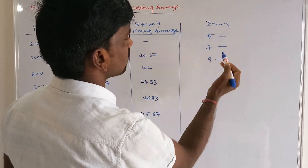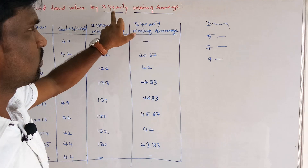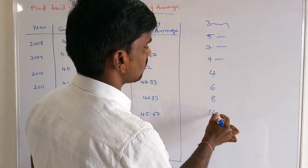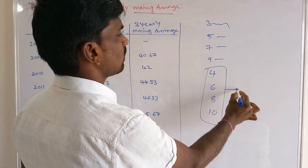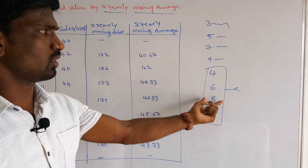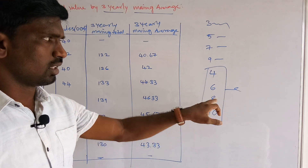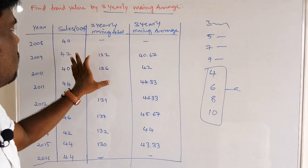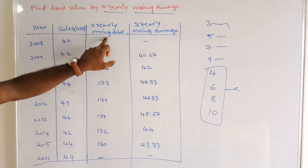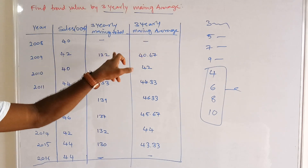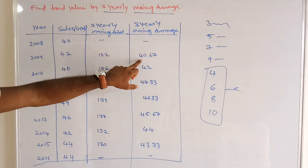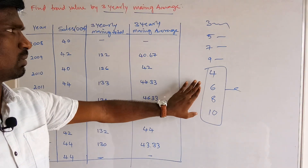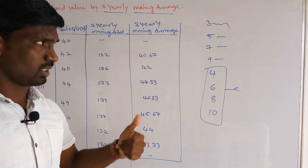For even number of years, it is quite difficult, but for odd number of years the process is straightforward. Whether the question asks for a three-year, five-year, seven-year, or nine-year moving average, we follow the same steps: calculate the moving totals and then divide by the number of years to get the trend values.